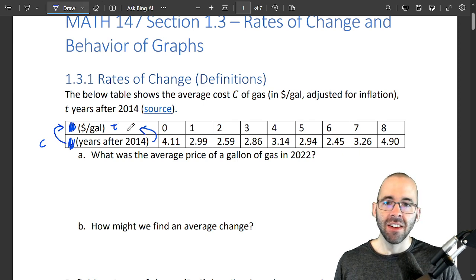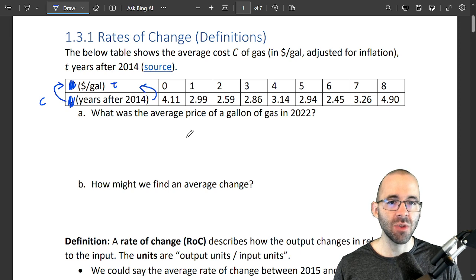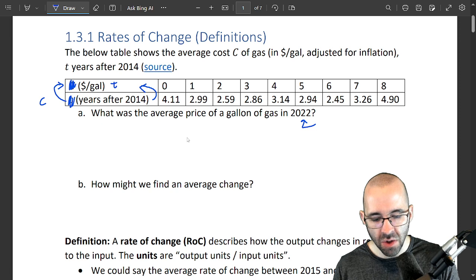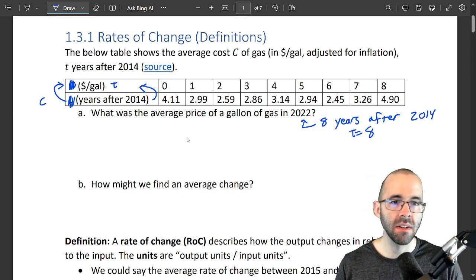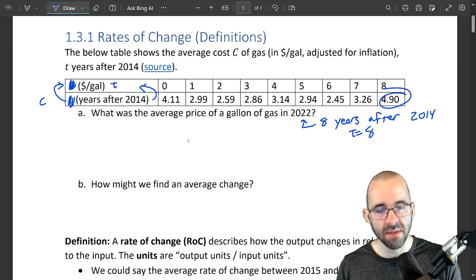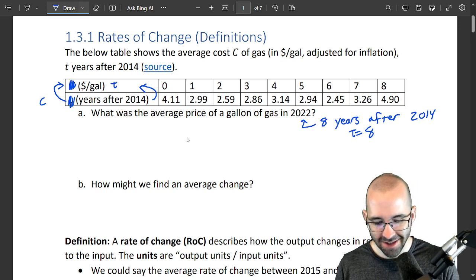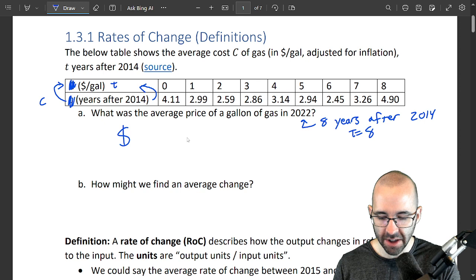So let's just answer some questions. What was the average price of a gallon of gas in 2022? 2022 is eight years after 2014, so it's going to be a t value of eight. We just read the table and say this is our answer: four dollars and ninety cents a gallon. That's the whole answer.